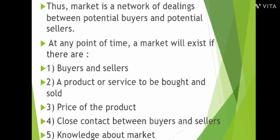For something to be called a market, we have five conditions: there must be a place where buying or selling happens; there must be a product or service; there must be a price; and both buyers and sellers should be aware of each other and the prevailing conditions in the market.